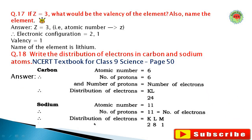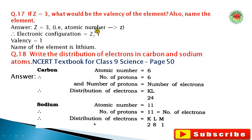Question number seventeen: If Z = 3, what should be the valency of the element? Also name the element. Atomic number 3 means 3 electrons distributed as: first shell 2, second shell 1. The outermost shell has 1 electron, so the valency is 1. The element is lithium.